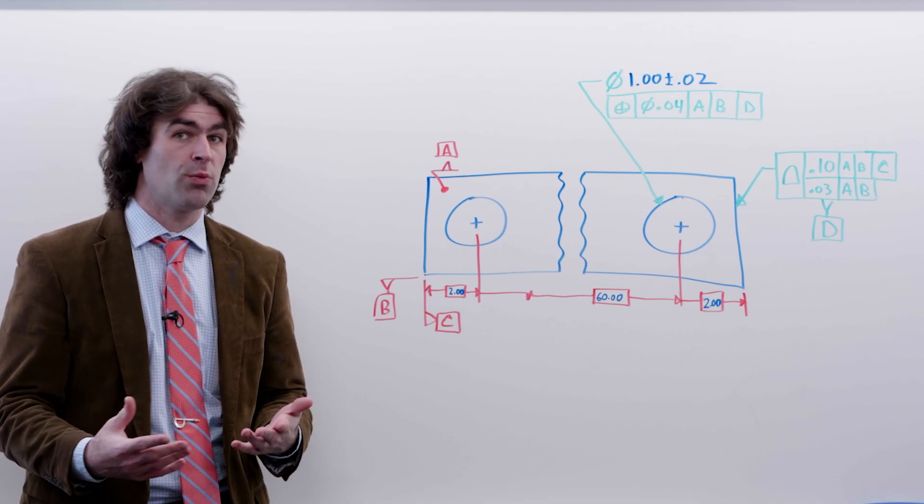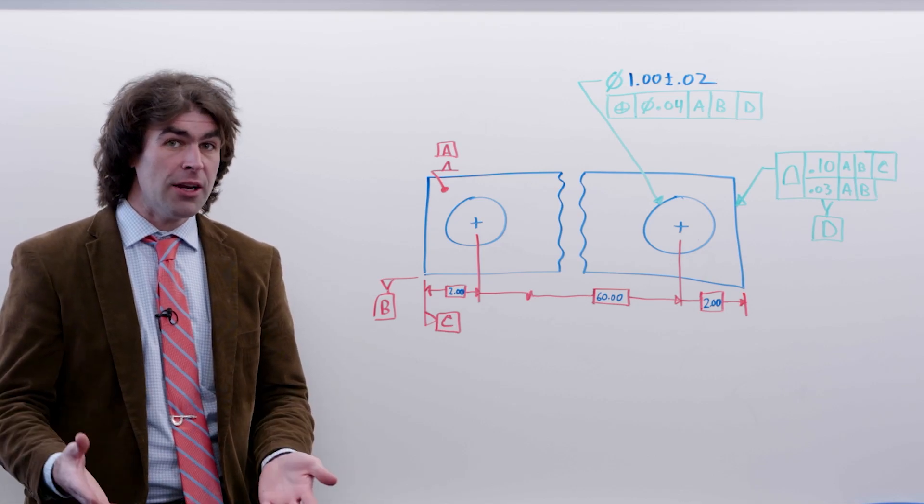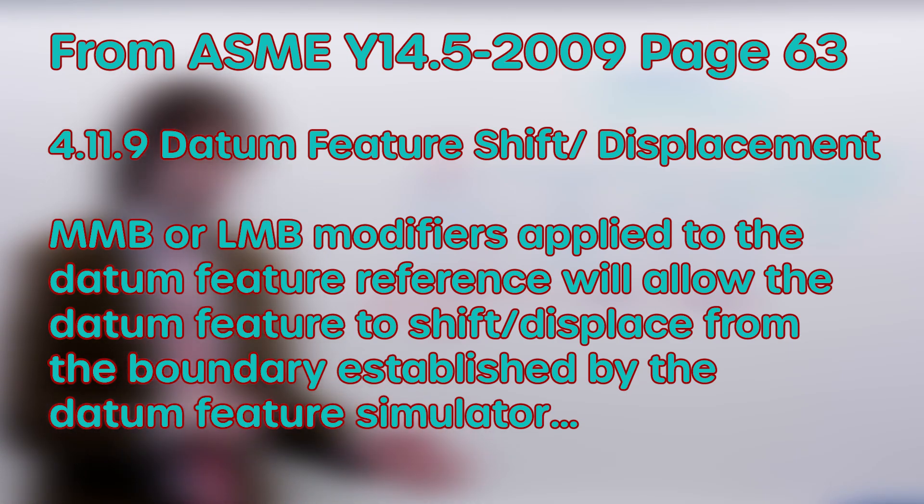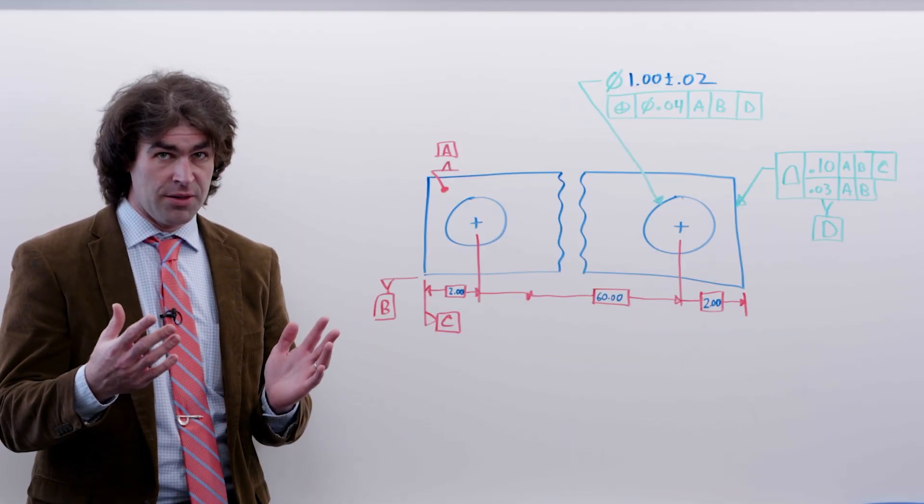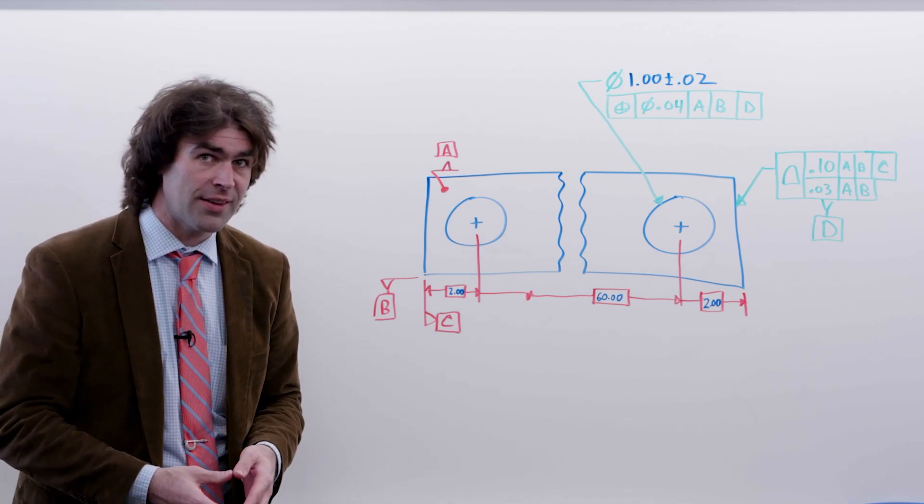You're going to get what's known as relative shift, which is very similar to datum shift. Datum shift is defined in the ASME standards as when you have a feature of size that serves as your datum. In this case on the board, none of the datums are features of size, but we're still going to get shift due to the datum moving, and I'll show you why in a second.